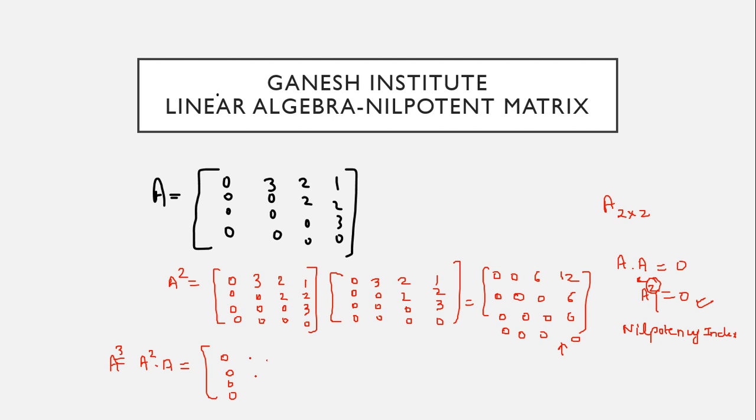So that means the A square we just found out: 0, 0, 6, 12; 0, 0, 0, 6; 0, 0, 0, 0; 0, 0, 0, 0. Multiply it by A: 0, 0, 3, 0, 0, 0, 0, 2, 2, 0, 0, 1, 2, 3, 0.